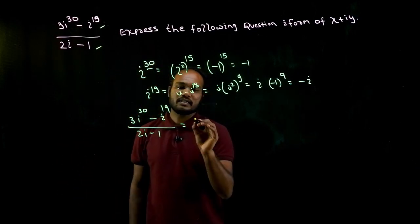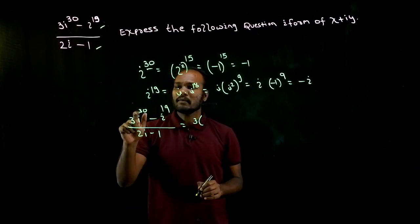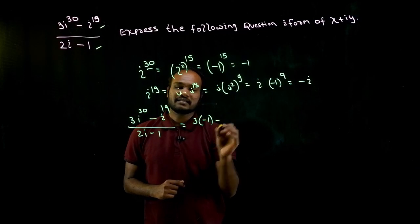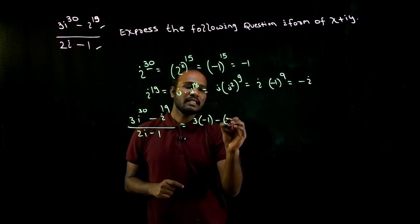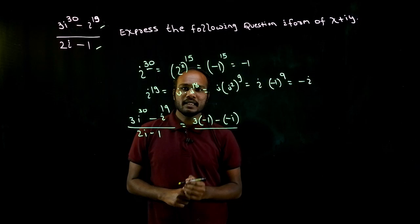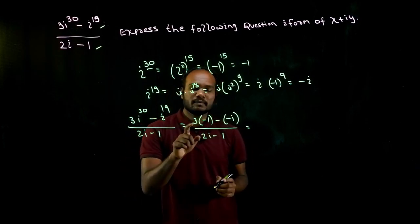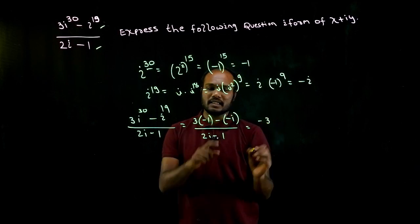I'll just replace whatever I found out. Three times i, i power 30, i power 30 is minus 1, minus i power 19, i power 19 value is minus i, divided by 2i minus 1.